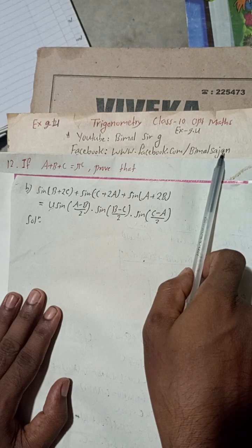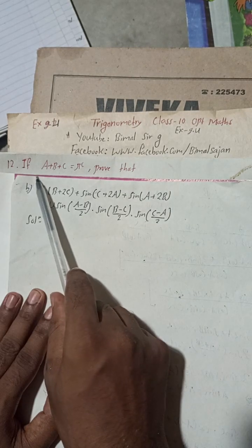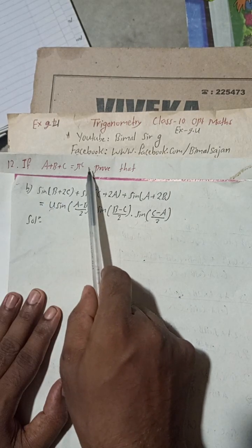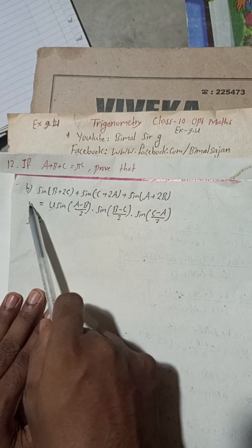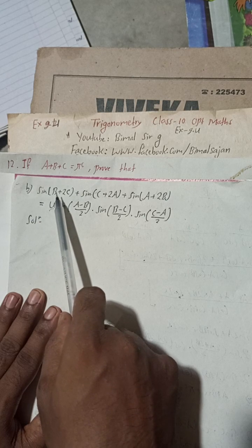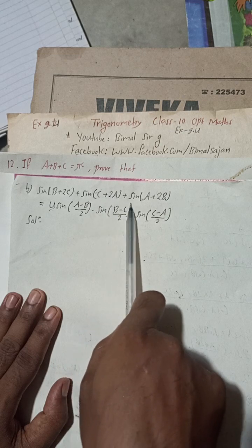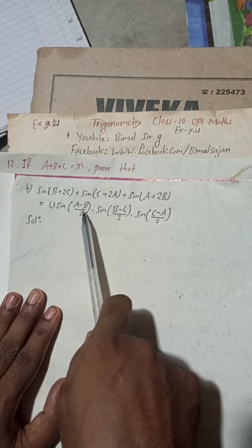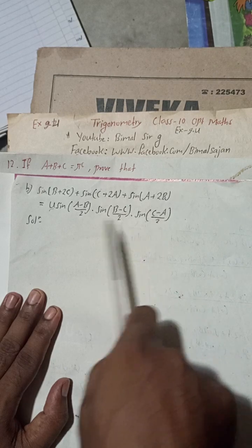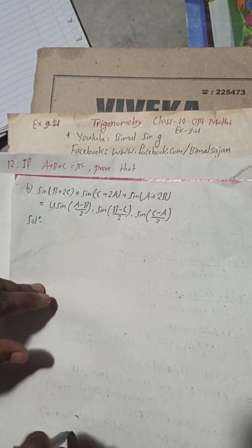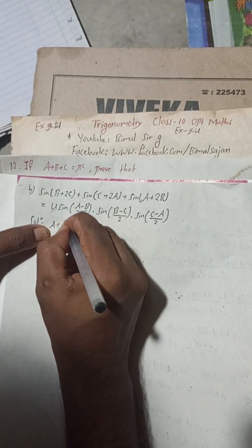Let's begin the solution. Question 12b: If a plus b plus c is equal to pi radian, prove that sin(b + 2c) + sin(c + 2a) + sin(a + 2b) is equal to 4·sin((a−b)/2)·sin((b−c)/2)·sin((c−a)/2).